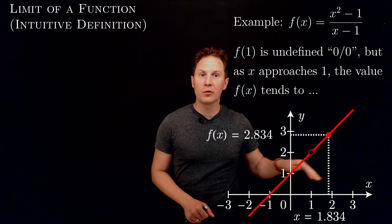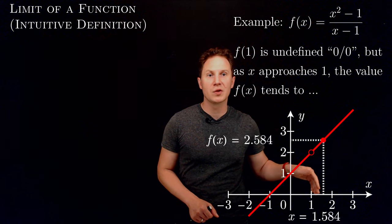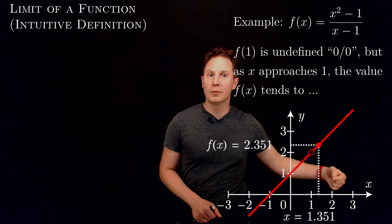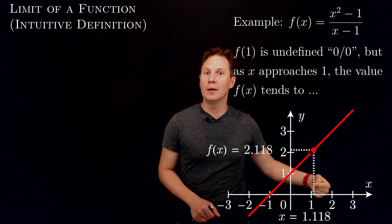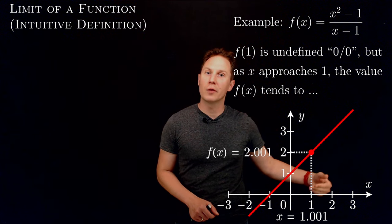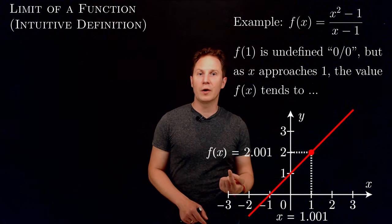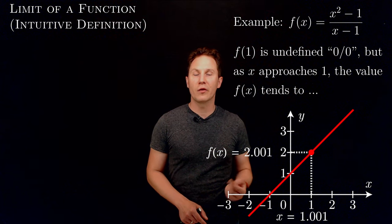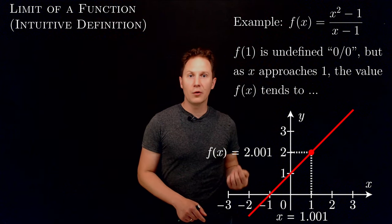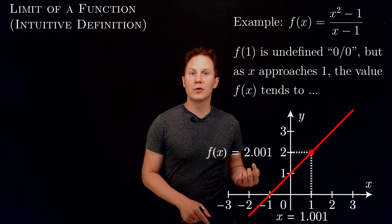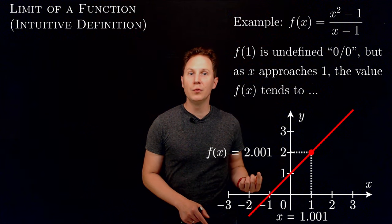And the same thing happens when x approaches 1 from the right, through input numbers greater than 1: the output values of our function f(x) get closer and closer to the number 2 again.